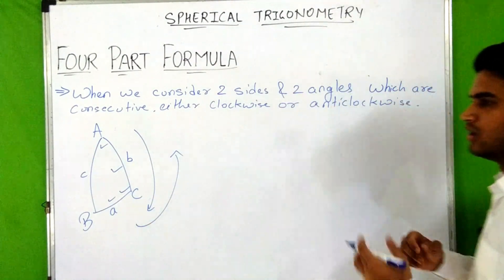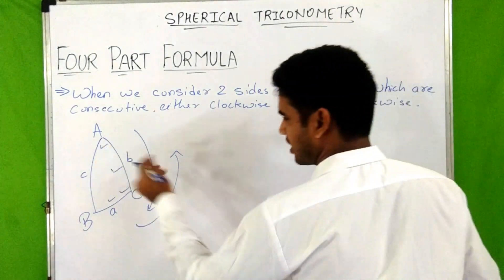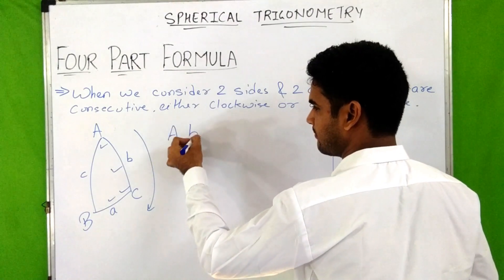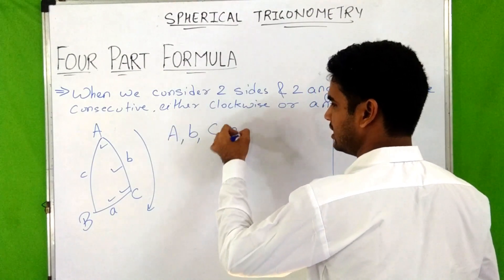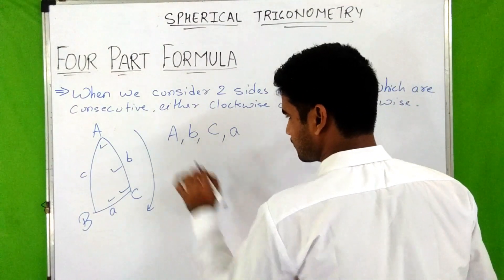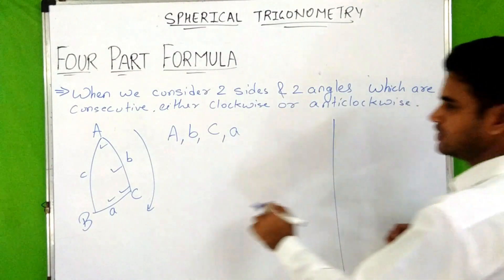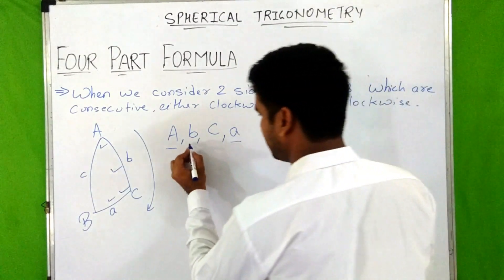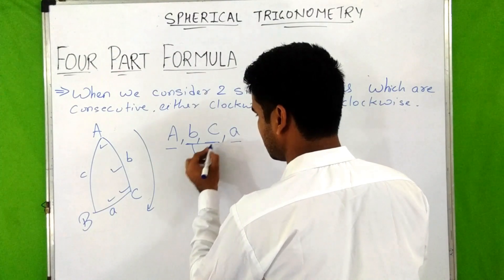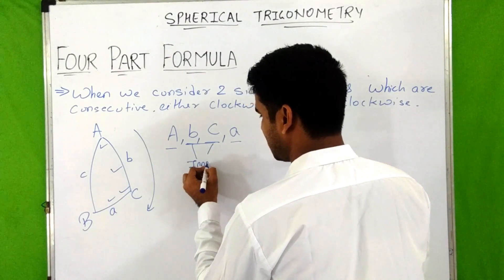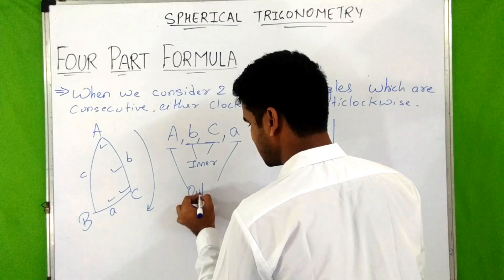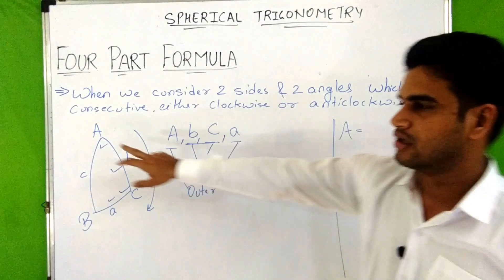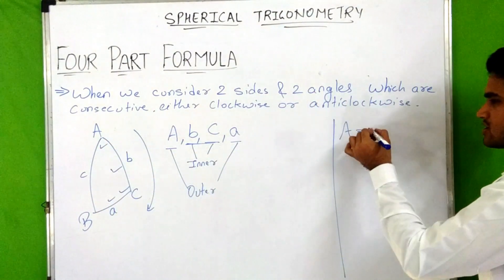Now, how do we name them? Going clockwise, we consider the parts: capital A, small b, capital C, and small a. The first and last parts are the outer parts, and the two parts between them are the inner parts. Capital A is an angle and it is the first part, so it will be written as outer angle.